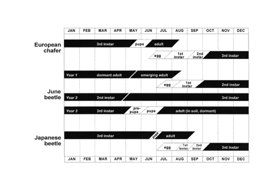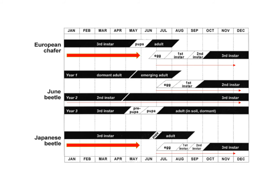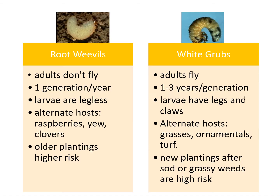Here is a visual of the life cycle just described. You can see that the European chafer and Japanese beetle lay eggs in the spring and larvae feed on roots through the summer, but most of the damage occurs when they are bigger — this third instar — before they pupate. June beetle larvae feed for two full years before pupating.